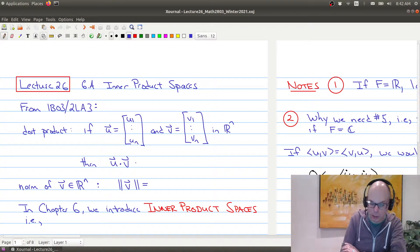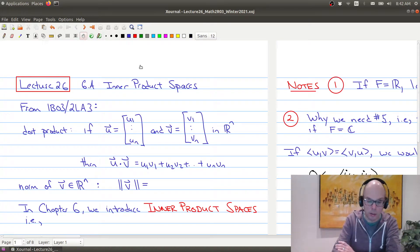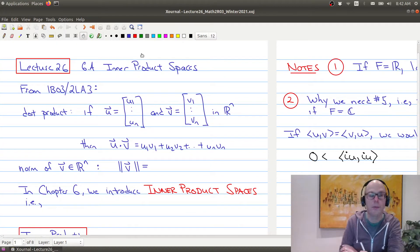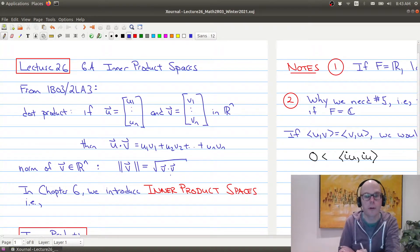...then the dot product is a number that you get by taking the first coordinates and multiplying it, so u1 times v1, and then u2 times v2, all the way up to un times vn. So this was the dot product, and the norm of a single vector was defined to be the square root of v dotted with itself.